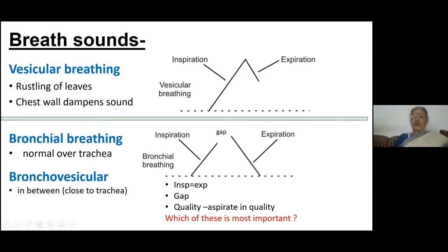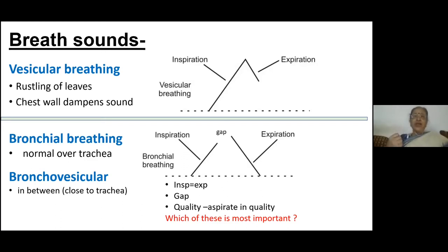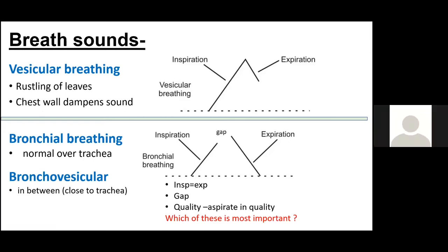Out of the three characteristics — inspiration equal to expiration, the gap, and the quality — which is the most important? Think about it. In normal vesicular breathing you are inspiring and expiring. I could lengthen my expiration voluntarily, for example, like when you do pranayama they tell you to breathe out for a long time. So inspiration and expiration being different in bronchial breathing — please understand it can be changed by the individual. That is not completely reliable.